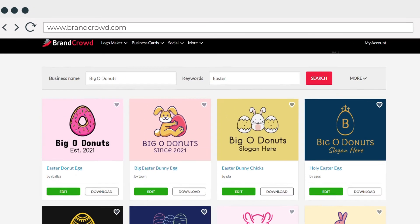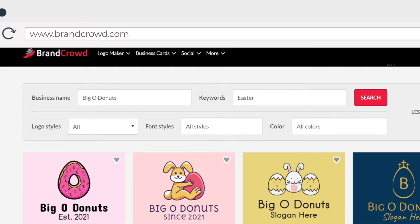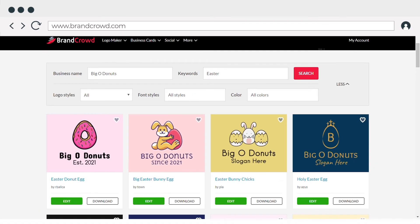As you can see, you can tweak the search engine however you want from the font, logo type, and colors. Direct your cursor to the keywords section and type Easter for that seasonal theme. The templates shown will now shift to show you Easter-themed logos.